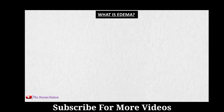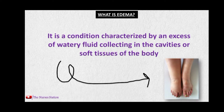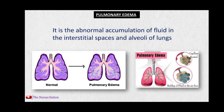In this video we will talk about pulmonary edema. Edema is the medical term for swelling. In this condition, extra fluid gets accumulated inside the body cavities or inside the soft tissues, giving that body part a puffy appearance. Pulmonary edema is the abnormal accumulation of fluid in the interstitial spaces and the alveoli of the lungs. The interstitial spaces are the spaces in between the alveoli.